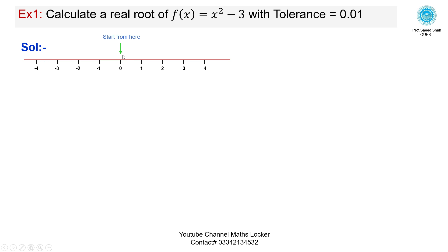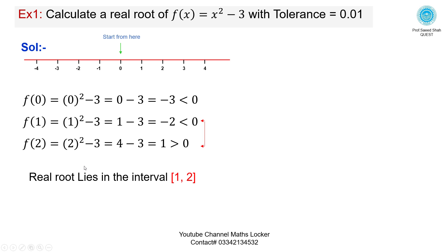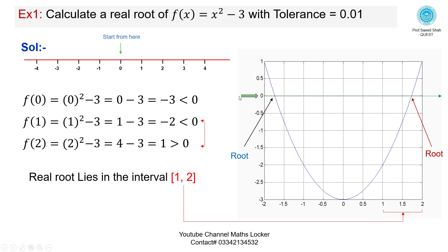Solution: Take the number line. Put x = 0: f(0) = -3, which is less than 0. Put x = 1: f(1) = 1 - 3 = -2, less than 0 — no sign change, root doesn't lie in [0, 1]. Put x = 2: f(2) = 4 - 3 = 1, greater than 0. There is a sign change, so the real root lies in the interval [1, 2].